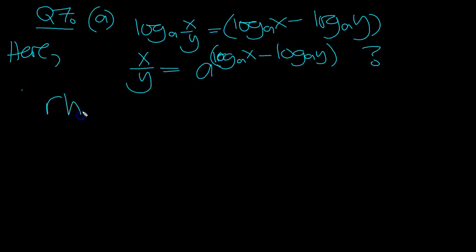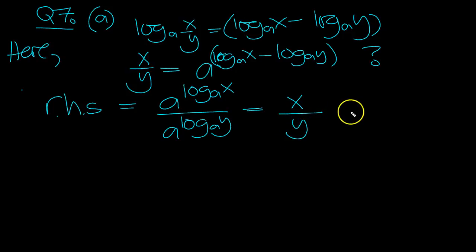So the right hand side then is equal to a to the log a of x over a to the log a of y. Minus with indices will be divide. And a log a of x is just the x. And a log a of y is just the y. OK, that's Part A.